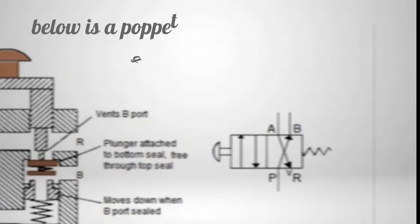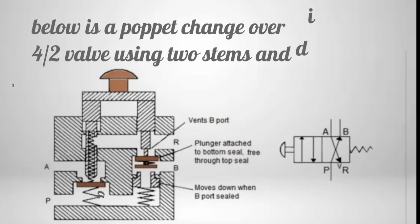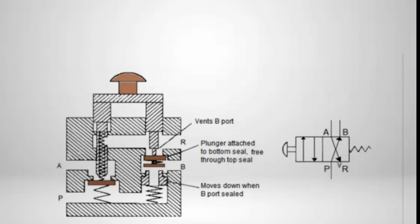Below is a poppet changeover 4-way valve using two stems and disc valves. When the push button is released, A and R ports are linked via the hollow left-hand stem, and P and B ports are linked via the normally open right-hand disc valve.